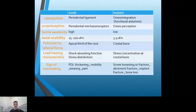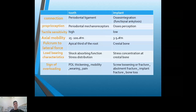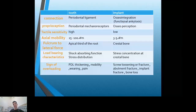The connection differs: the tooth has a periodontal ligament while the implant is osseointegrated or functionally ankylosed. The tooth has periodontal mechanoreceptors, while the implant has no receptors. Tactile sensitivity is high in the tooth. Axial mobility is 25 to 100 microns in the tooth, while in the implant it is only 3 to 5 microns.